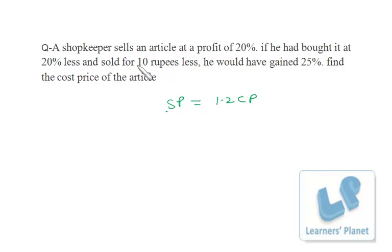Selling price is 10 rupees less, so SP minus 10 is the new selling price and new cost price is 80% of original CP. So the profit would have been 25%.